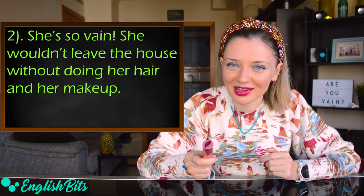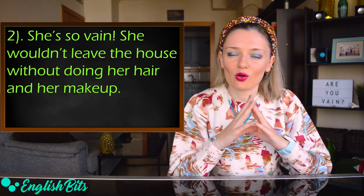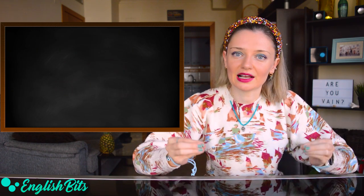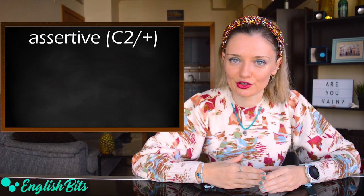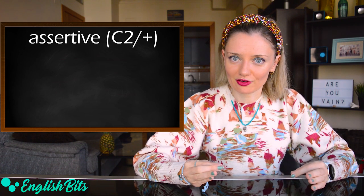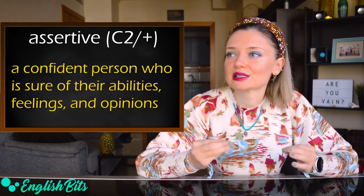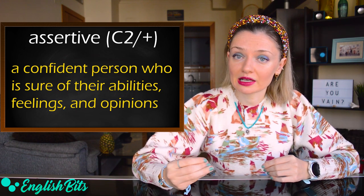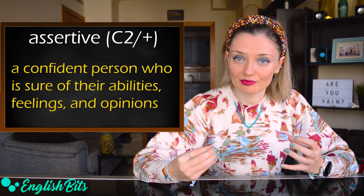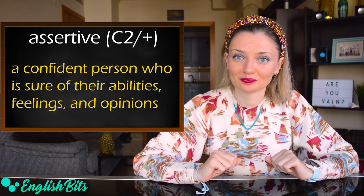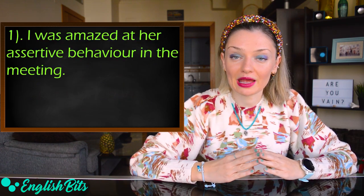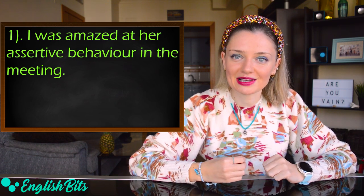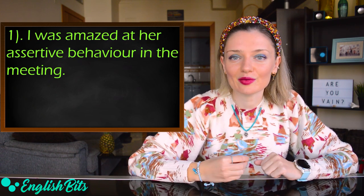Are you vain? Now let's look on the bright side — we're going to learn seven positive personality traits. Number four: assertive. An assertive person is a confident person who is sure of their abilities, feelings, and opinions. For example: I was amazed at her assertive behavior in the meeting.